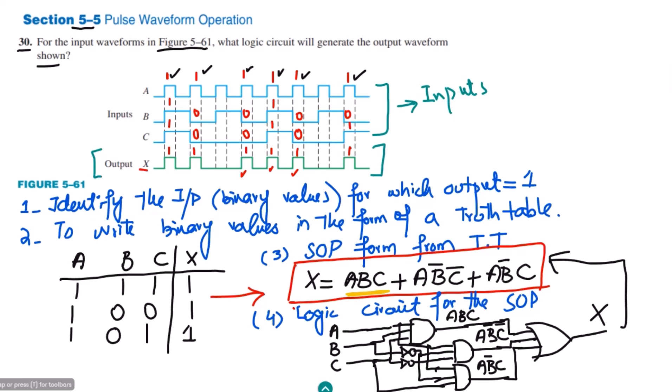So this is the logic circuit obtained from our SOP expression for X. We used three AND gates, NOT gates for the complements, and a final OR gate. I think these steps are now clear — given certain input and output waveforms, this is how we find the logic circuit. I'll see you with more interesting questions in the next video. Take care.